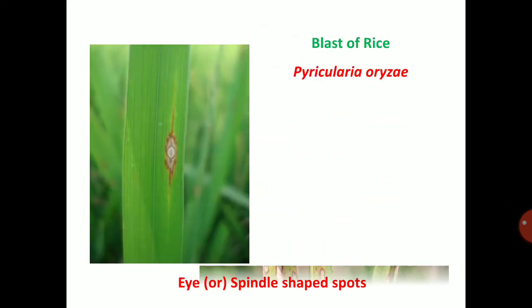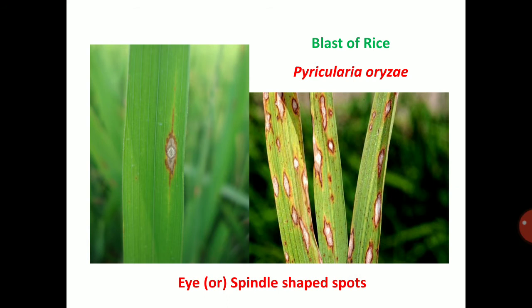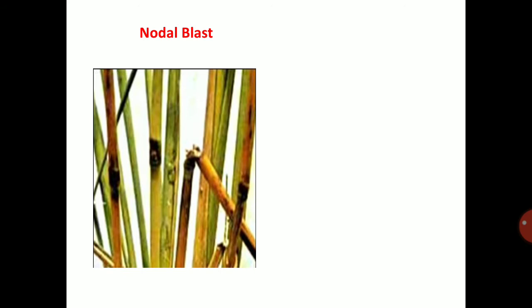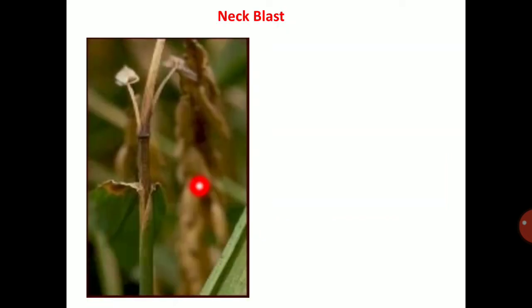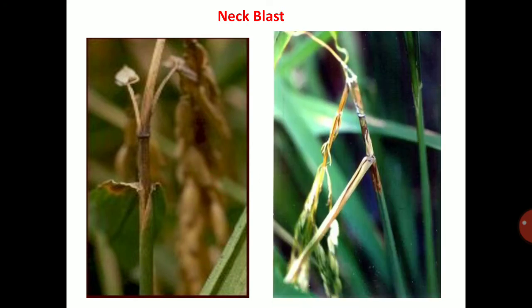So to summarize leaf symptoms: eye or spindle-shaped spots are visible on leaves with grey centre and dark margin. For nodal blast, the nodal region is mainly infected, first turning dark brown then becoming black. For neck blast, the neck region is infected and produces the neck blast symptom.